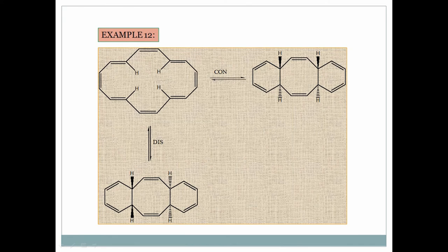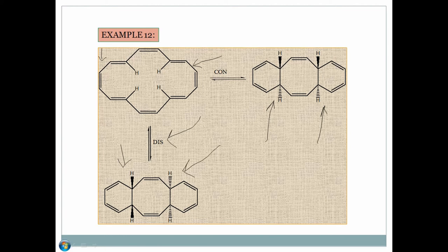Example 12: A large ring system — both a left-side and right-side 6 pi electron system are present. Both hydrogens are opposite. In the product, con-electrocyclization gives both hydrogens in opposite directions in each ring. For dis-electrocyclization, both hydrogens come to the same side in the product — first ring and second ring both hydrogens come to the same side.